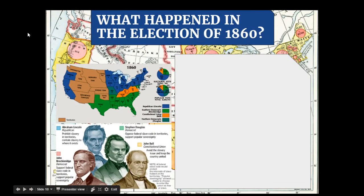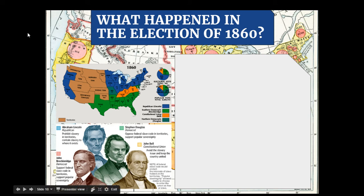Then there was an election — one of the most interesting and consequential in U.S. history. It was interesting because there were four different candidates running, and not all four were even permitted to run in all of the states. What happened in the election of 1860?